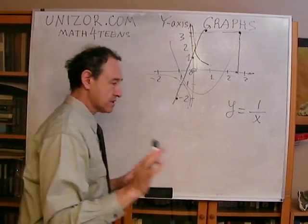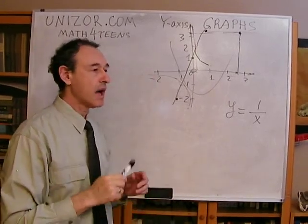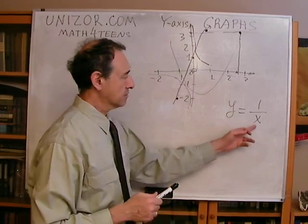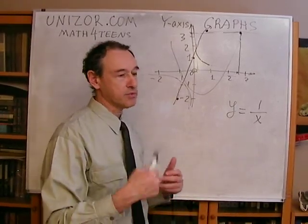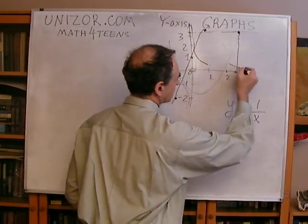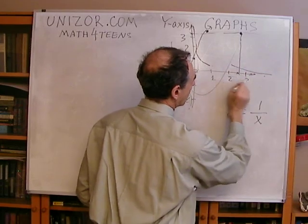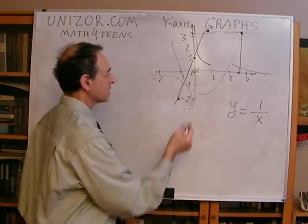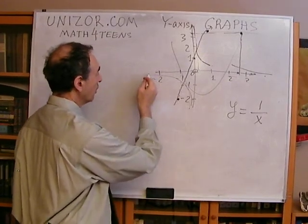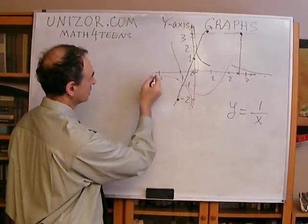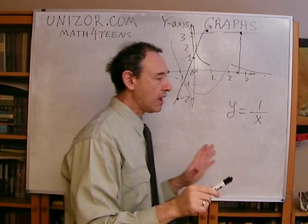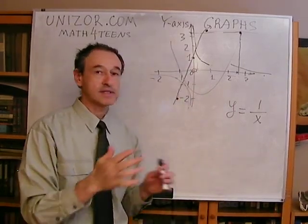Now, what's very important is how the graph behaves when the argument goes to infinity. For y = 1/x, if x is increasing, obviously the reciprocal is decreasing down to zero, so the function will get smaller and smaller as our argument gets bigger and bigger. The same thing happens in the negative direction: if we go to minus infinity on the x-axis, then the function will also diminish in its absolute value but stay negative — approaching the x-axis from below.